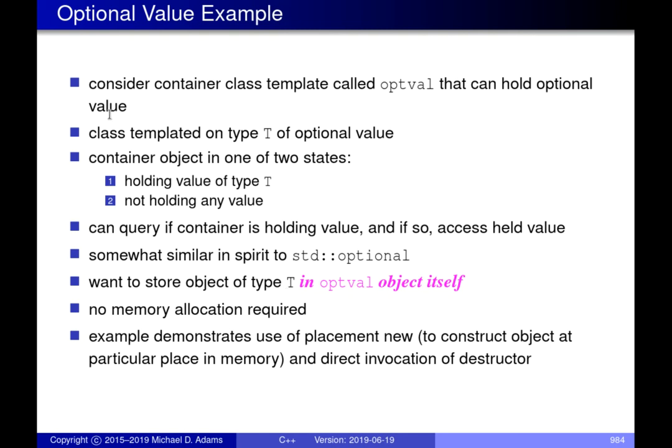We're going through things in order of increasing complexity. The first example is what I refer to as an optional value class, somewhat similar to `std::optional` in the standard library, but a very stripped-down bare-bones version. What this optional value class does is act as a container that can hold at most one element of type `T`. It's a template parameterized on `T`. I could also choose not to put anything there — so it's basically either a `T` or nothing. The `T` is optional.